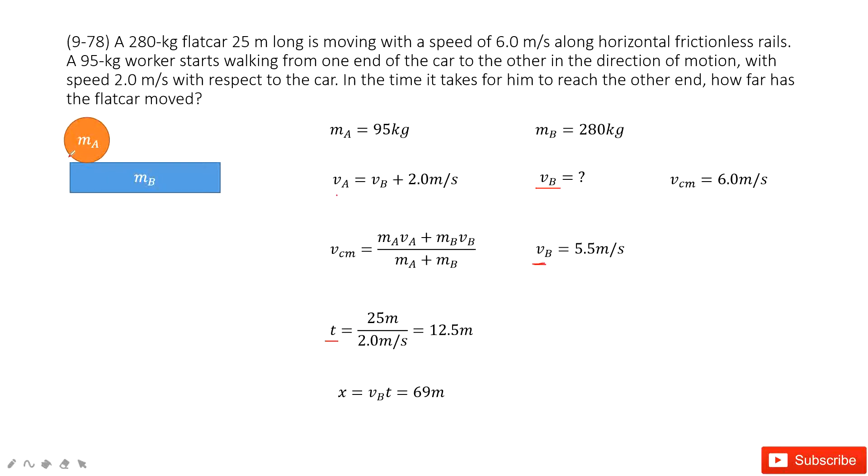So the distance moved is from this end to this end. The length of the car is given as 25 m, and also the velocity a to b is given as 2 m per second. So then the time is given.